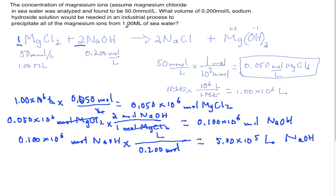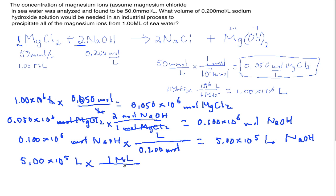Since the problem gave the volume in megaliters, we'll convert the final volume into megaliters as well. Starting with 5.00 × 10⁵ liters, and knowing that 1 megaliter equals 10⁶ liters, we get 0.500 megaliters of NaOH.